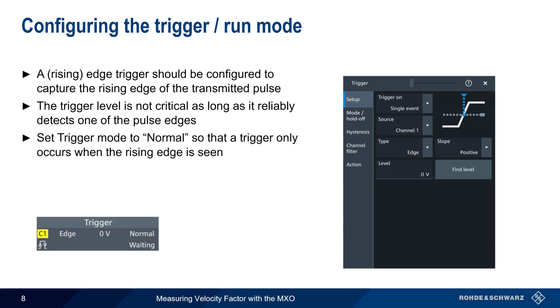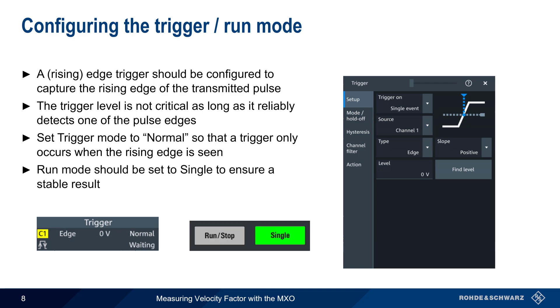Using normal trigger mode, rather than the default auto mode, is also recommended to ensure that the MXO only triggers when a rising edge is seen. And finally, operating the MXO in single shot mode is recommended for obtaining a stable, consistent result.